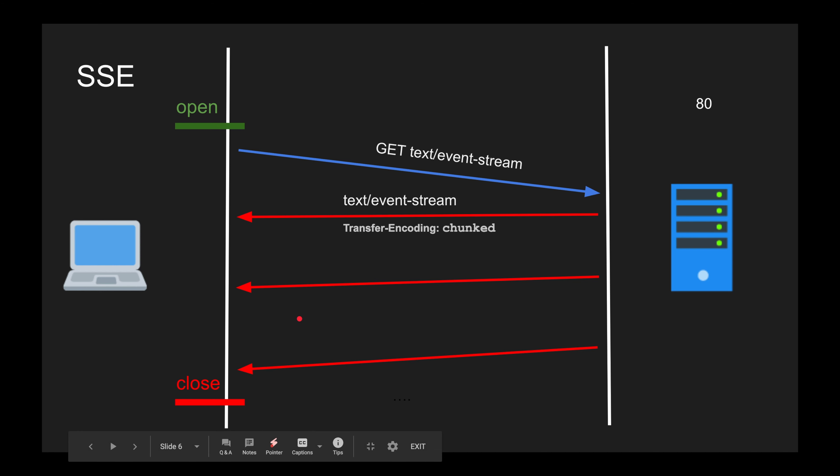Once you're done, either the server or the client can close the connection. There are tricky things with HTTP 1.1 in the browser — you have a maximum of six connections per domain. This is a weird limitation browsers have with HTTP 1.1. We don't have this problem with HTTP/2 because there's one TCP connection with streams.